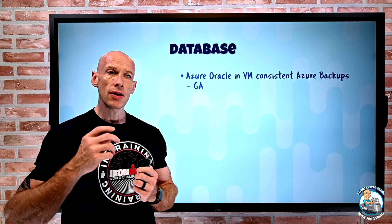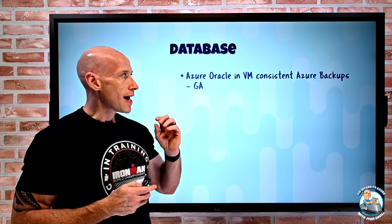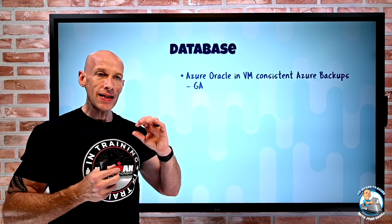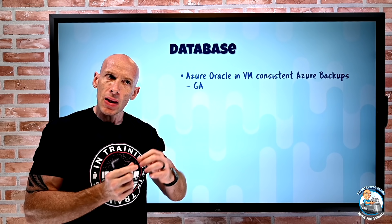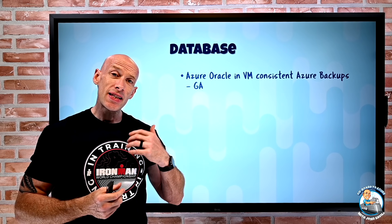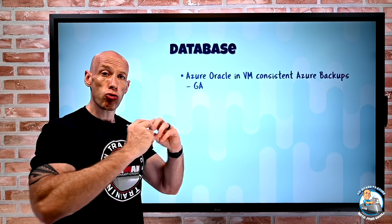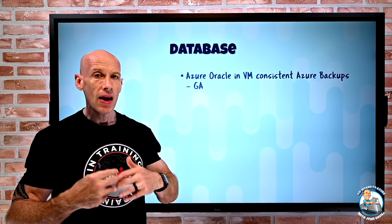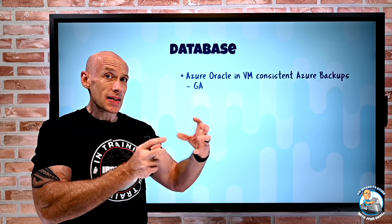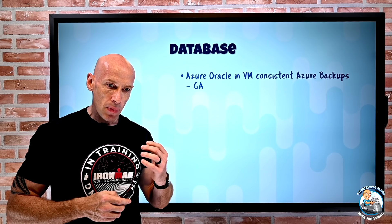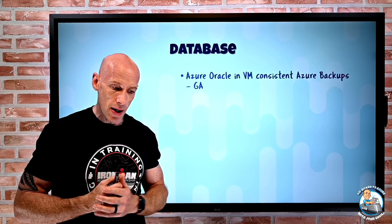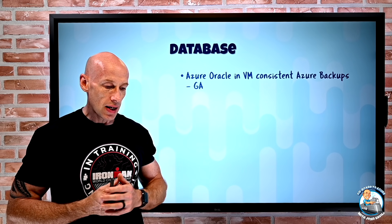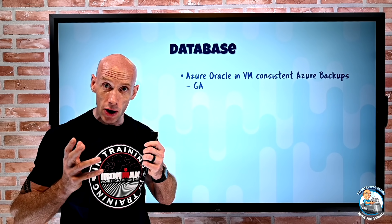On the database side, if you're using Oracle database in Azure virtual machines, you can now get a consistent database backup using the native Azure backup solution. It's a series of pre and post scripts — when it does a backup of the VM, it runs a pre-script to quiesce, pause changes, and flush things out to disk of the Oracle database, takes the backup, then unfreezes it. This gives a nice database-consistent backup using native Azure backup, which is incremental, cost-effective, and verifiable by Oracle database clients.